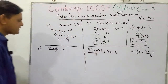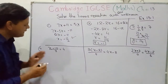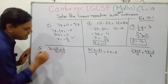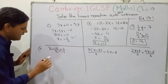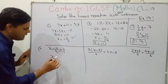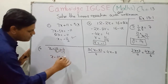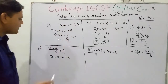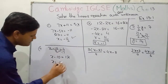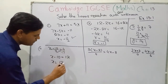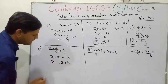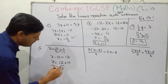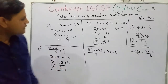Question number 4 also uses cross multiplication. When you multiply 1 to this quantity and 3 to this quantity: 1 multiply x gives x, minus 1 multiply 10 gives 10, and 3 times 4 is 12. The process is the same as question 1. So you take x equal to 12, then take this quantity to the other side and change the sign, giving 10. So x equals 12 plus 10, and your answer is 22.